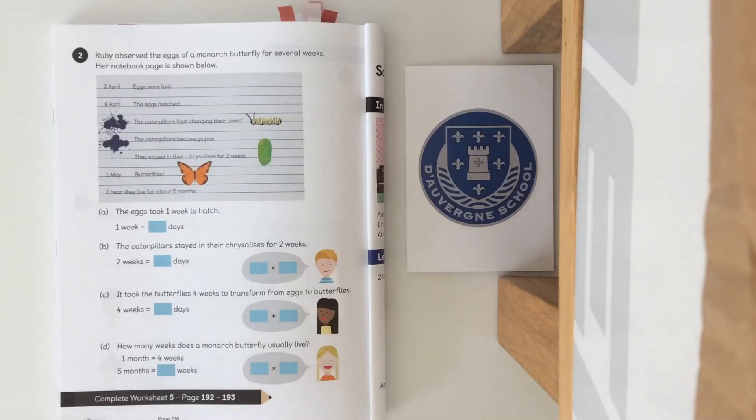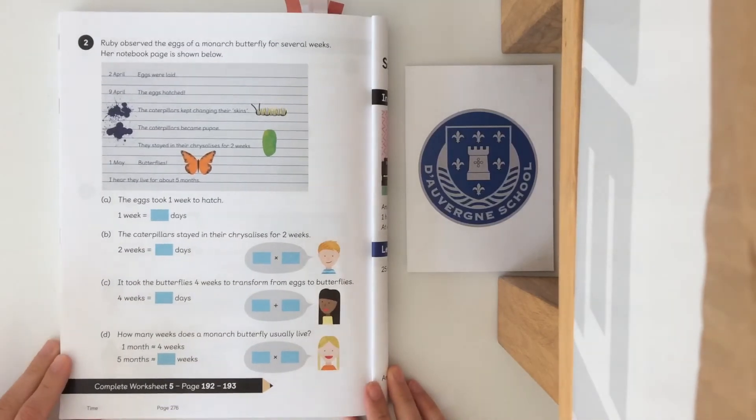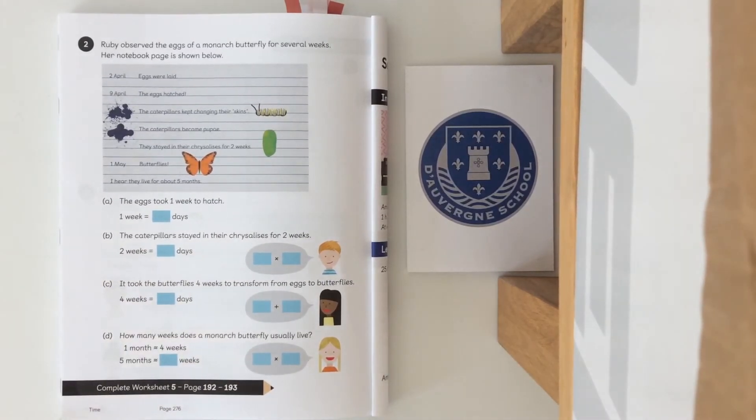Question C: it took the butterflies four weeks to transform from eggs to butterflies. Four weeks equals how many days? And question D: how many weeks does a monarch butterfly usually live? One month equals four weeks, so five months equals how many weeks?